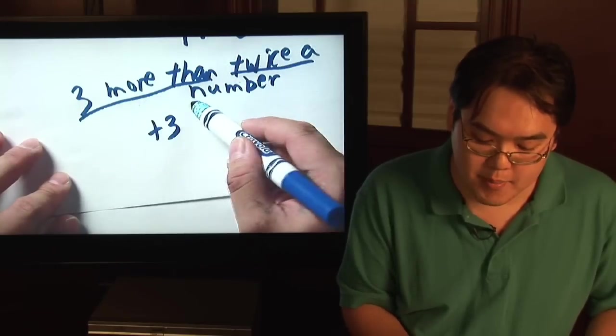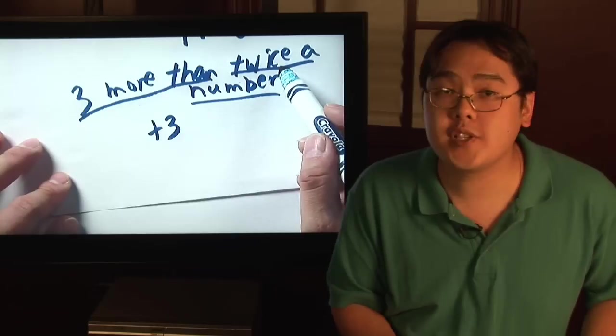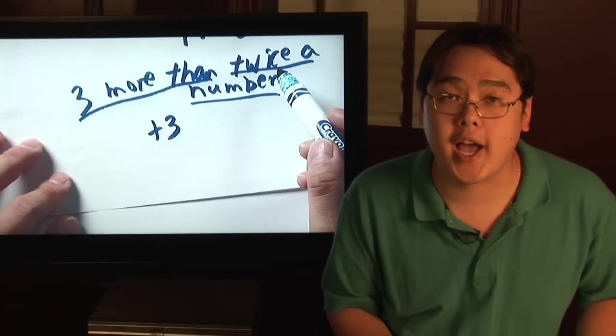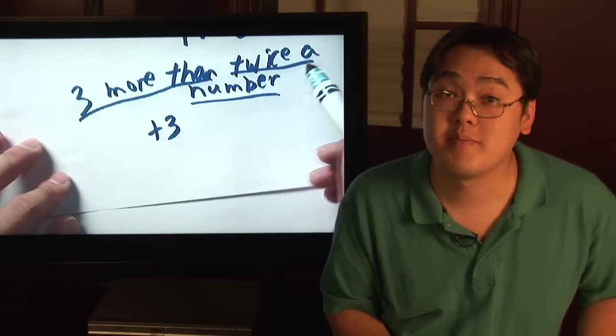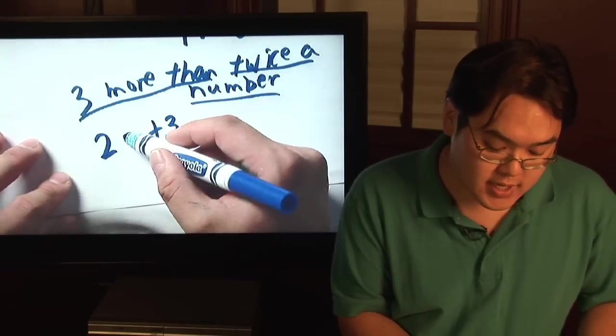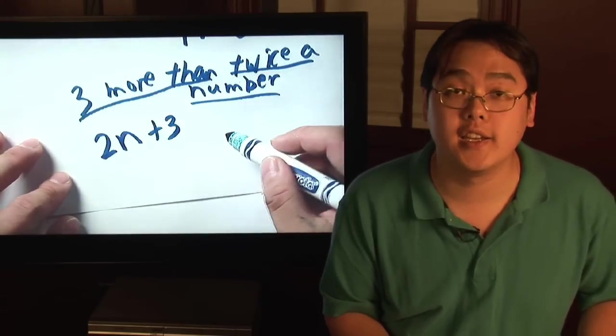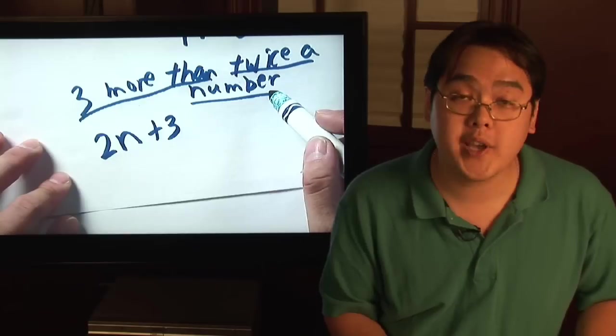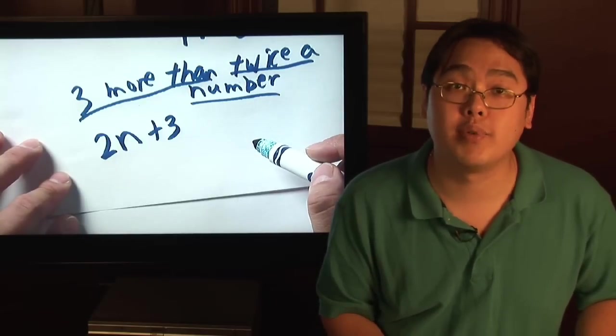Now twice a number, if you're doing something twice, you're doing something 2 times. That's multiplication. So that means twice a number implies 2 times a number. Let's just call it n again. So 3 more than twice a number is going to be 2n plus 3.